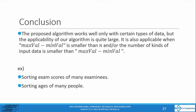The proposed algorithm works well only with certain types of data. And the applicability of our algorithm is quite large. It is also applicable when max val minus min val is smaller than n, and or number of kinds of input data is smaller than max val minus min val. The target applications include, for example, sorting exam scores of many examinees and sorting ages of many people.